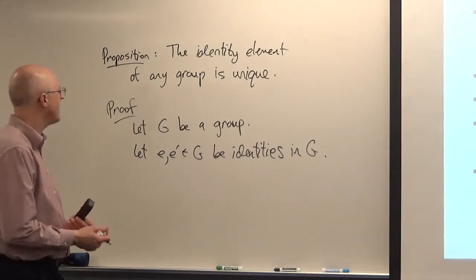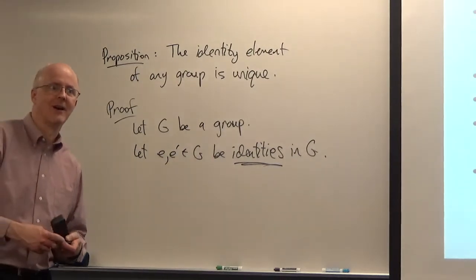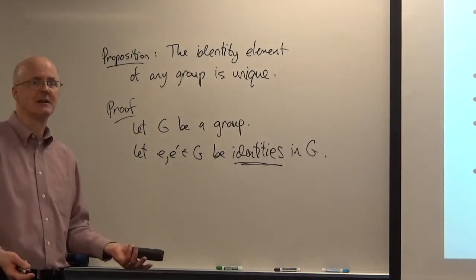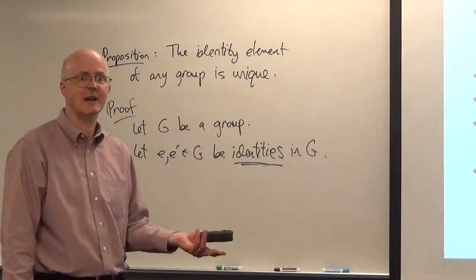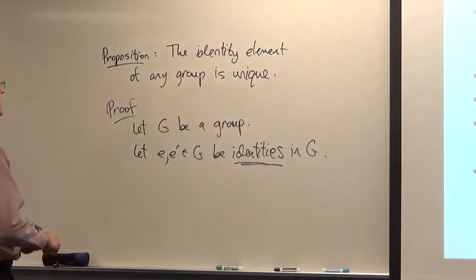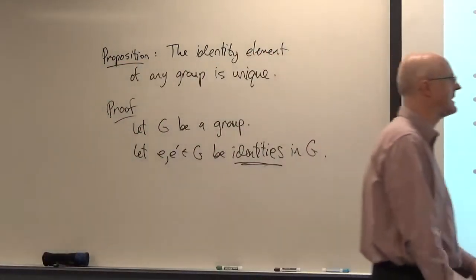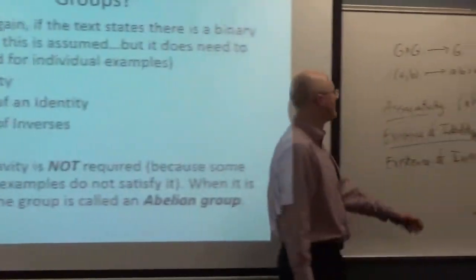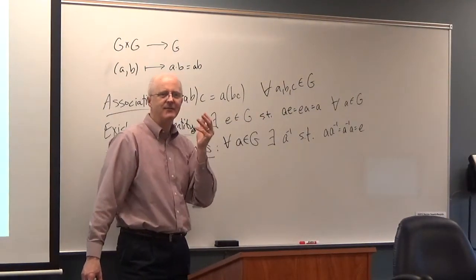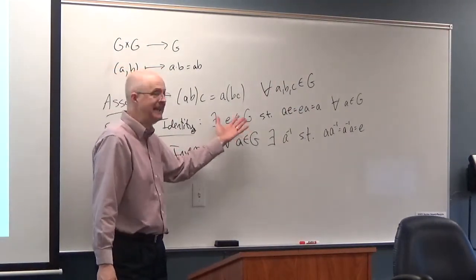Proof. Let G be a group. Let E and E prime be identities. By the way, prime here is not anything related to calculus, no derivatives here. We actually will talk a little bit about derivatives later in the course. More as a formal thing, not in terms of limits. More as just a formal manipulation you can do. So suppose you've got more than one identity, essentially. If you can show that these two things must be the same, then you'd be done. That would mean the identity is unique. So what do you do? We must need to use the fact that they're identities. That's a real key thing to realize.